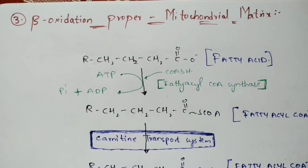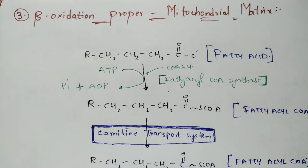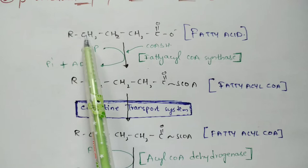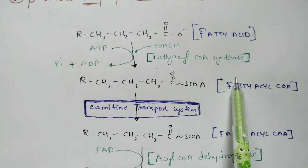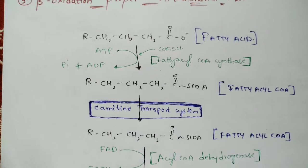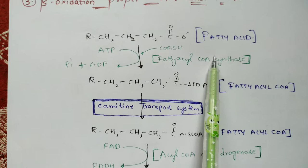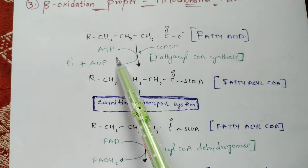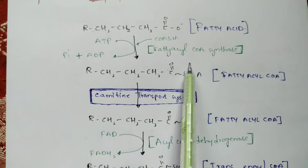Coming to the third step: beta oxidation proper, which occurs in the mitochondrial matrix. The reactions begin with the fatty acid, which undergoes the activation process to form fatty acyl-CoA. For this, coenzyme A and either fatty acyl-CoA synthetase or thiokinase is used, along with ATP and magnesium ions, producing fatty acyl-CoA. This fatty acyl-CoA enters the carnitine transport system as explained in step two.